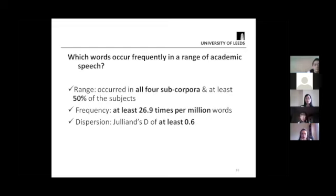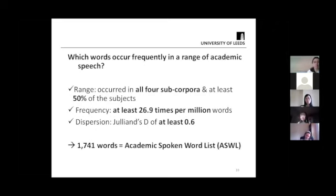Once the corpus was created, the next step was to identify items for our word list. To be selected for the word list, a word needs to occur in all four sub-corpora and in at least 50% of the subject areas, have a frequency of at least 26.9 times per million words, and have a dispersion of at least 0.6. These statistical measures ensure the list captures the most frequent and wide-ranging words in the corpus, so it can benefit students from different subject areas. As a result, we identified 1,741 words that meet these criteria and are included in the academic spoken word list.